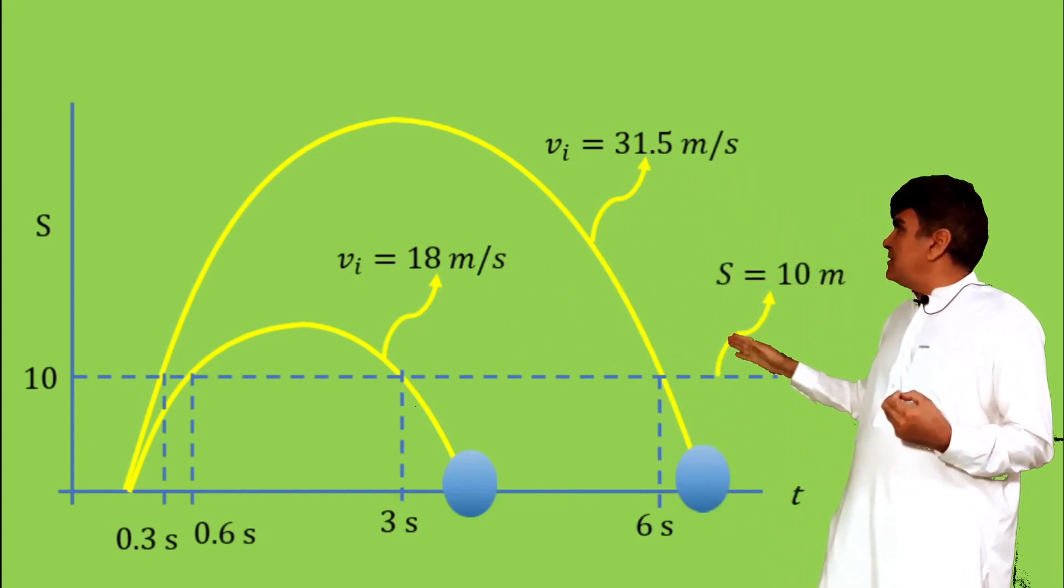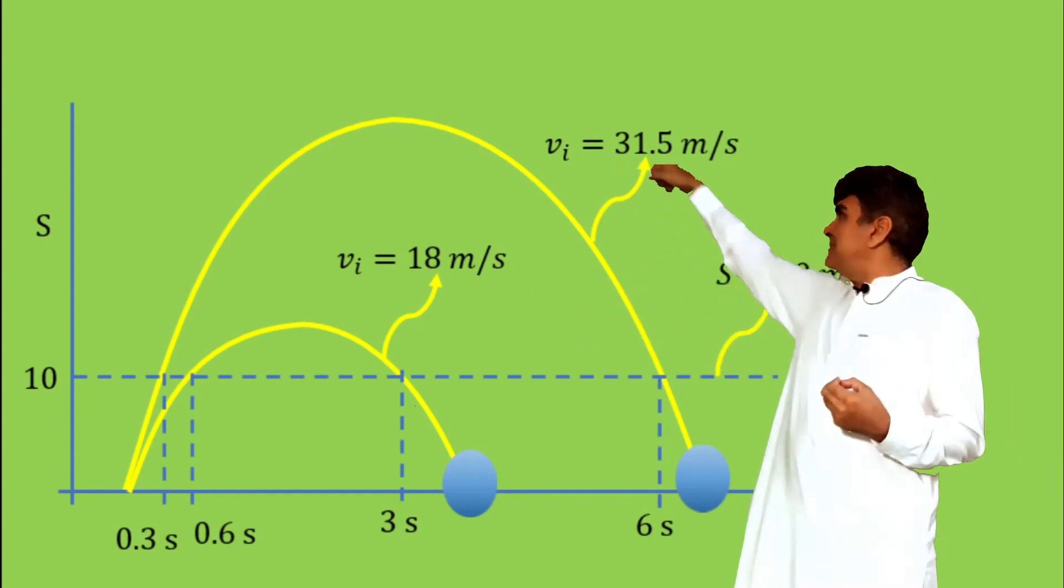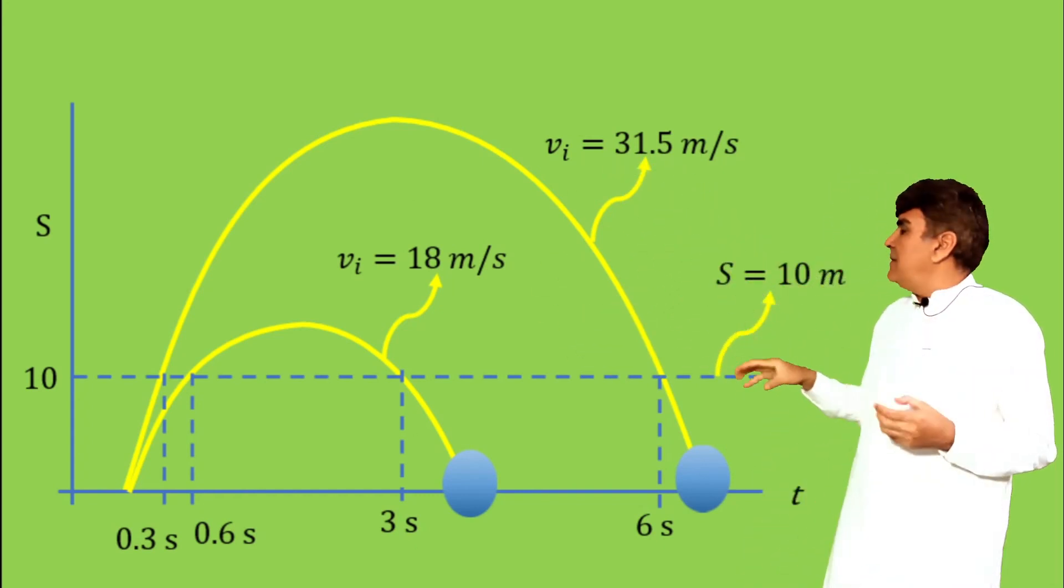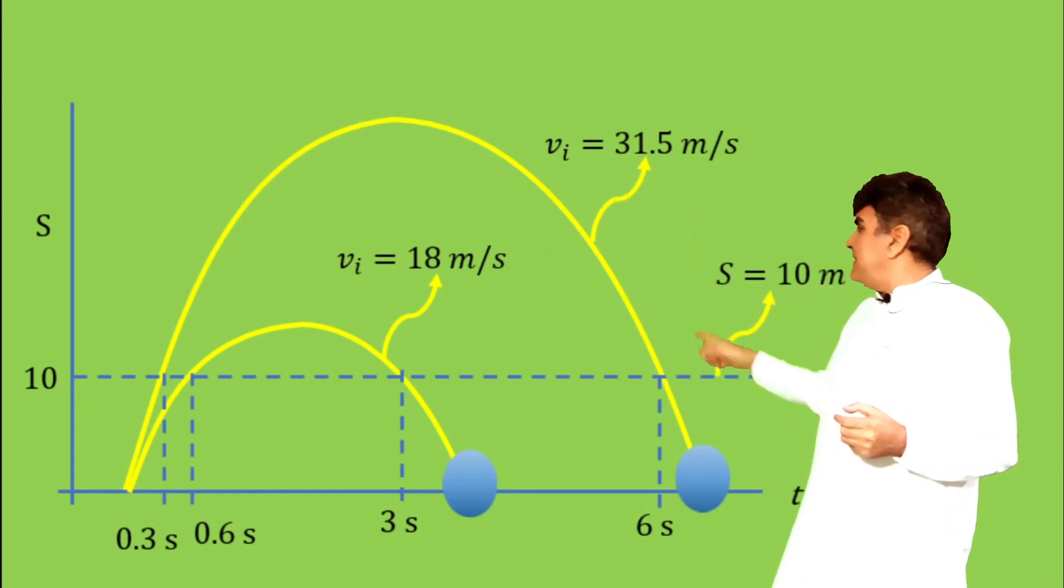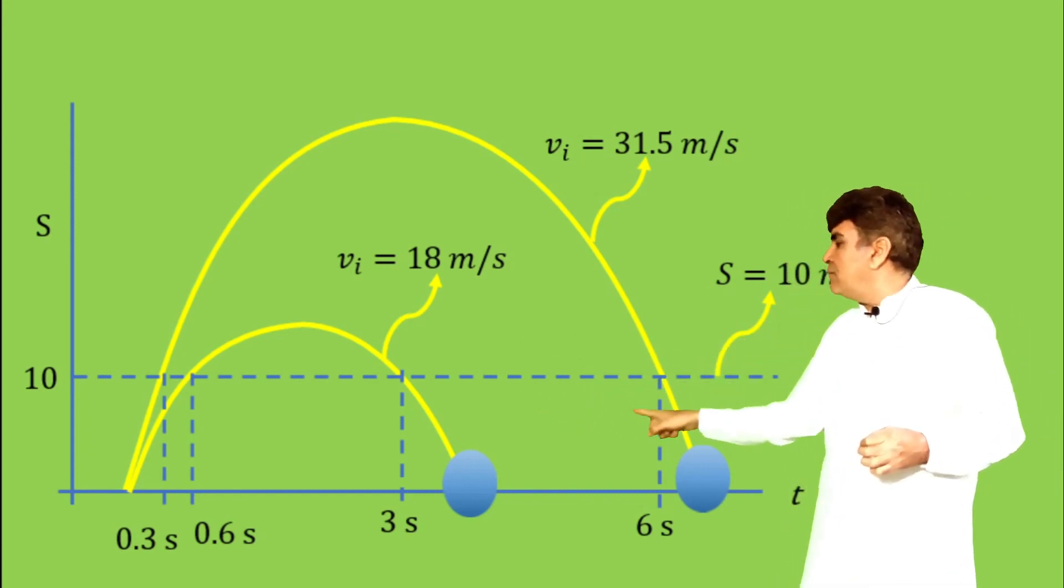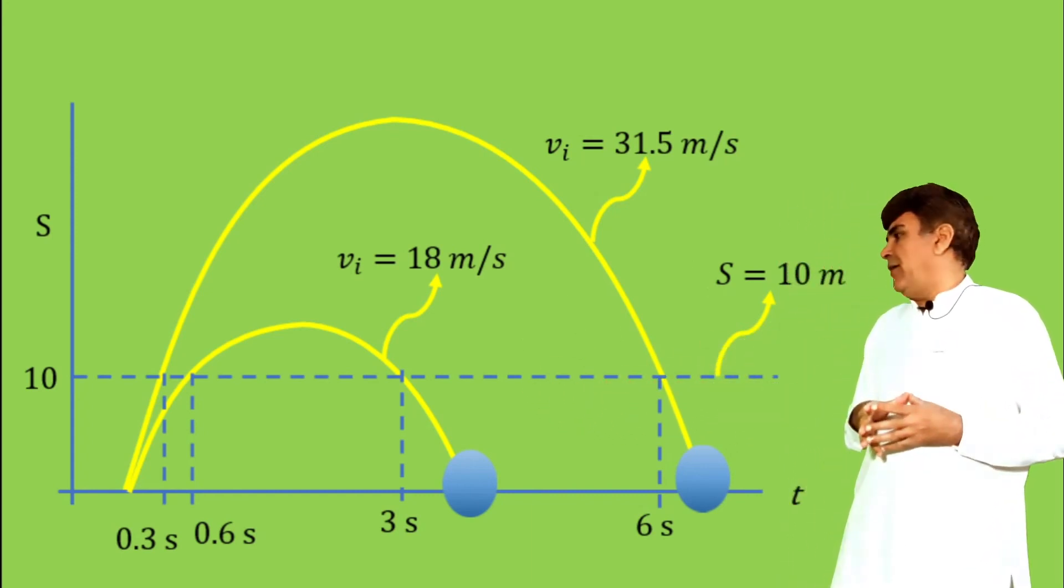Thus higher the initial velocity, the longer the body will take to reach its maximum point and then back to 10 meters, covering this additional distance that gives us time of flight longer than the one that moves with small parabola.